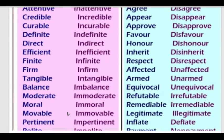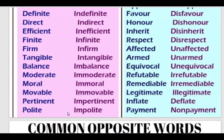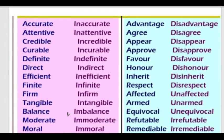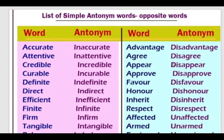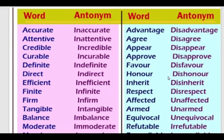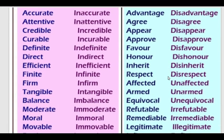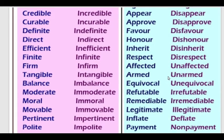More prefix-based antonyms: Balance – Imbalance. Moderate – Immoderate. Immoral – Moral. Movable – Immovable. Impolite – Polite. Advantage – Disadvantage. Agree – Disagree. Appear – Disappear. Approve – Disapprove. Favor – Disfavor. Honor – Dishonor. Inherit – Disinherit. Respect – Disrespect. Affected – Unaffected. Armed – Unarmed.